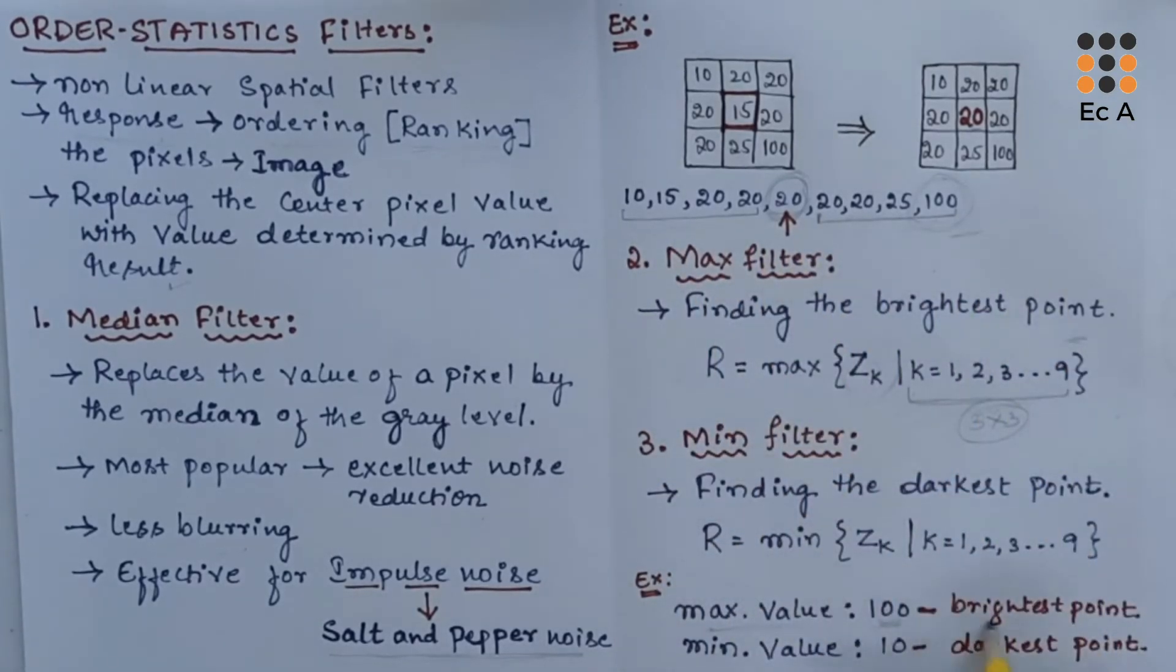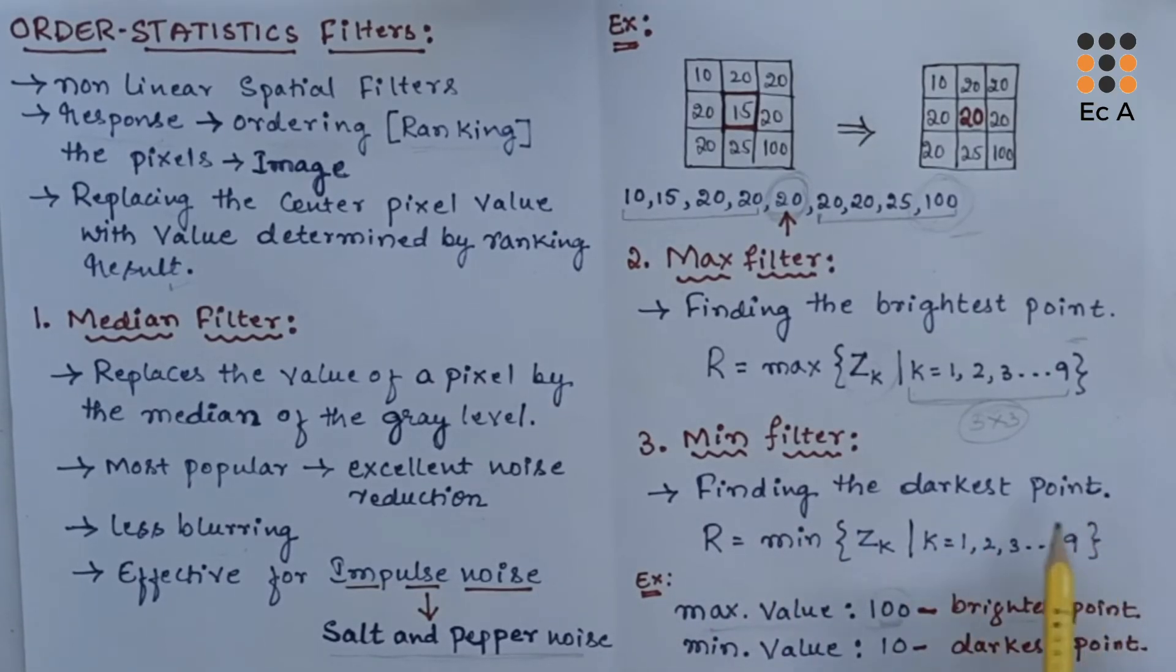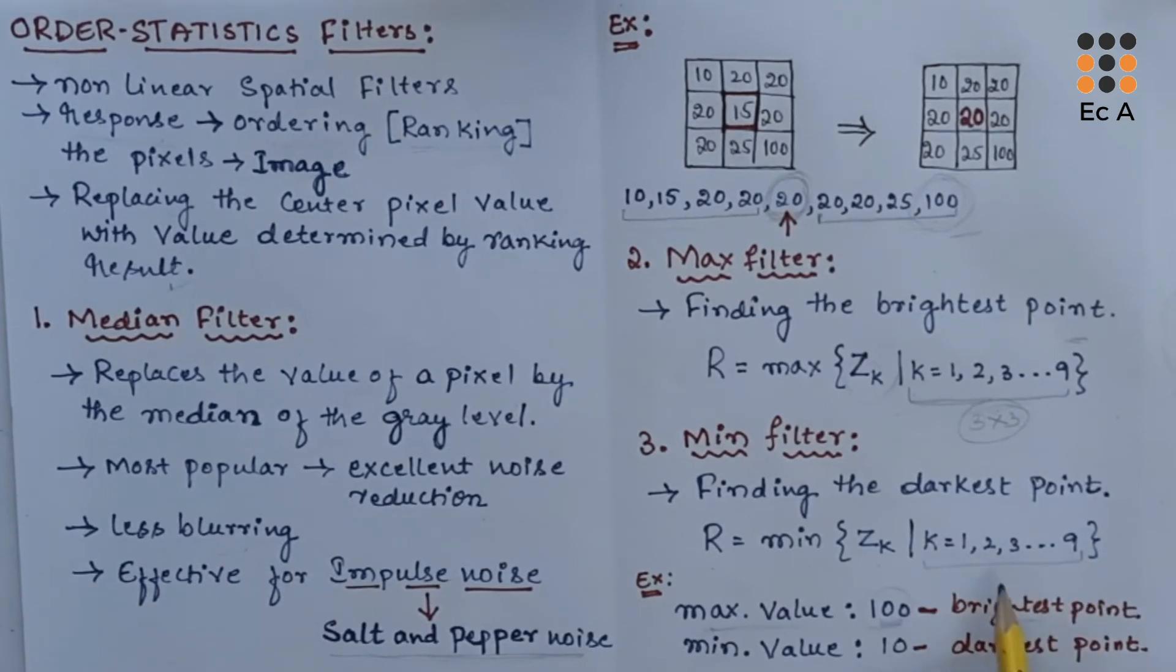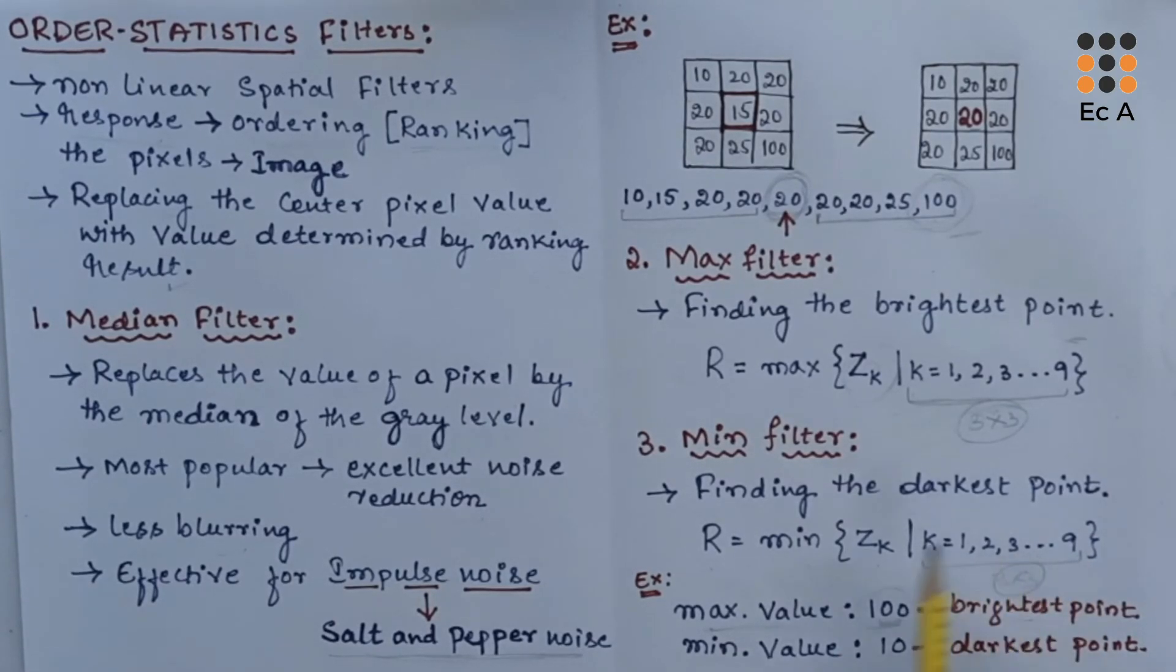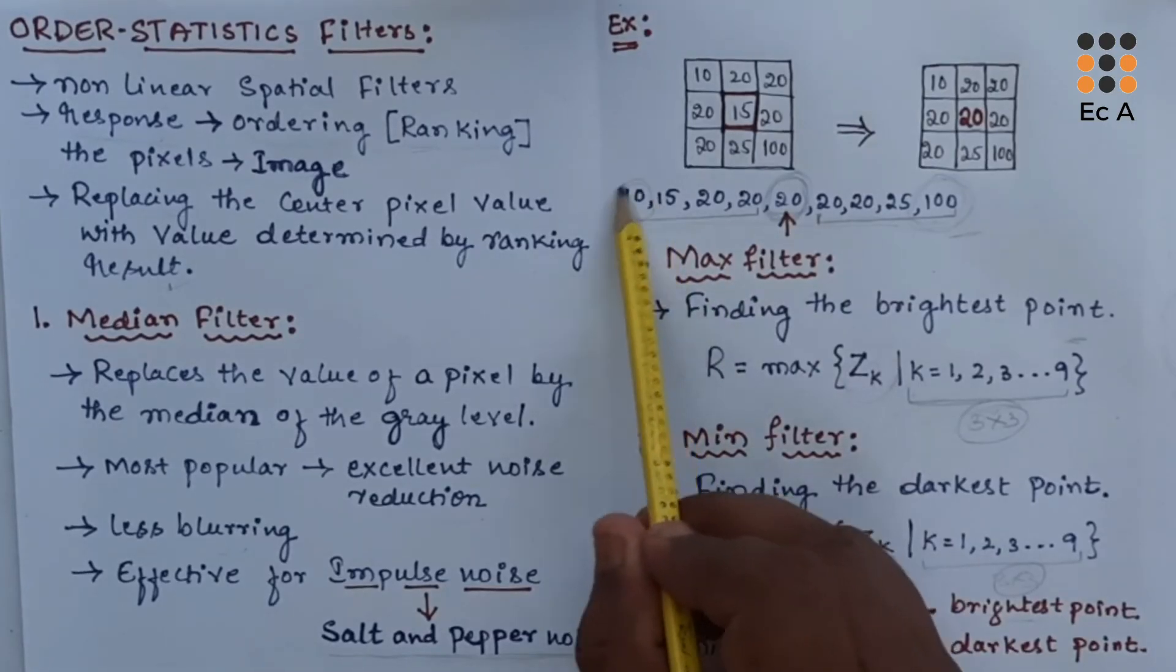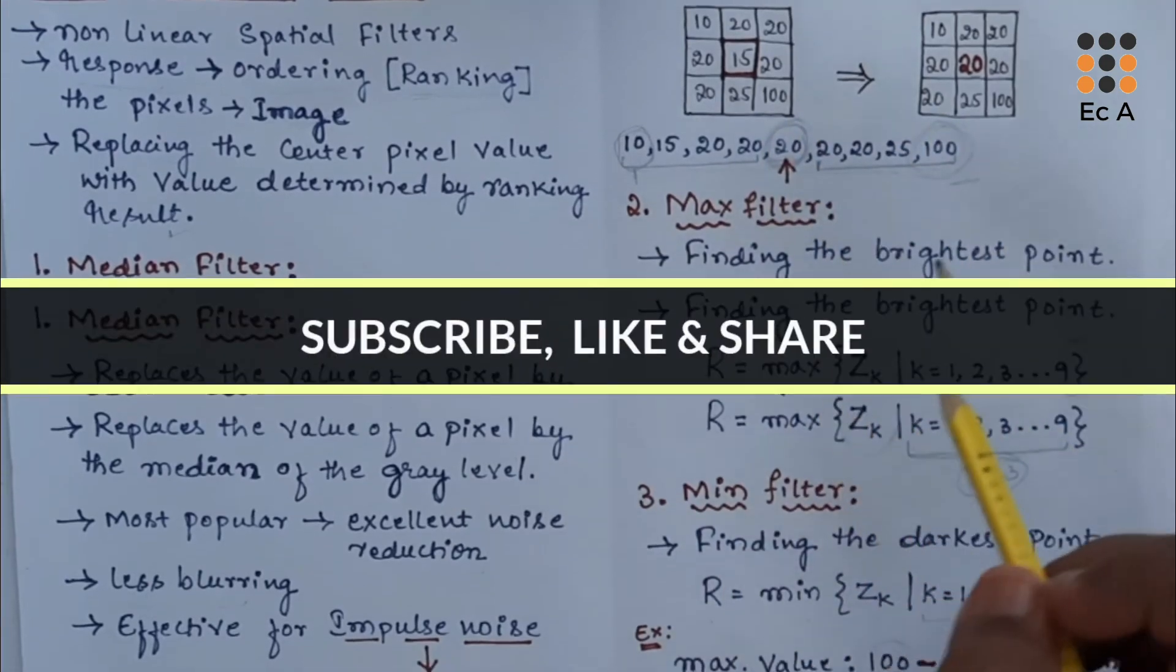We have min filters, which are very useful in finding the darkest point in a given image. This can be represented as R equals minimum of ZK, where K value is varying from 1 to 9 for 3 by 3 pixels. The output of min filter is 10. If you observe these pixel values, the minimum value is 10. So this is the darkest point in the given image.